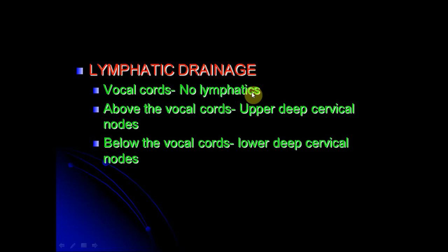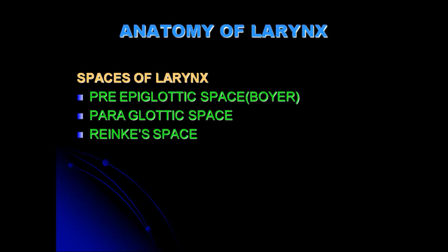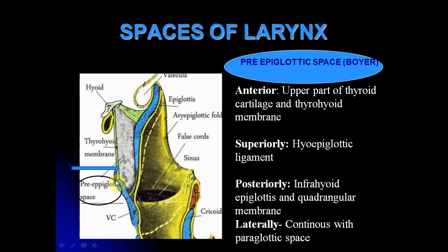Because of the sparsity of lymphatics, vocal cord malignancies rarely metastasize to the cervical lymph nodes. There are some spaces within the larynx: the pre-epiglottic space, the paraglottic space, and Reinke's space. The pre-epiglottic space is bounded anteriorly by the upper part of the thyroid cartilage and the thyrohyoid membrane, superiorly by the hyoepiglottic ligament, and posteriorly by the infrahyoid epiglottis and part of the quadrangular membrane. It is filled with fat and loose areolar tissue. When a laryngeal tumor extends to the pre-epiglottic space, because of the presence of fat, it becomes radioresistant.